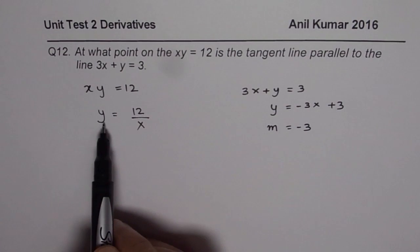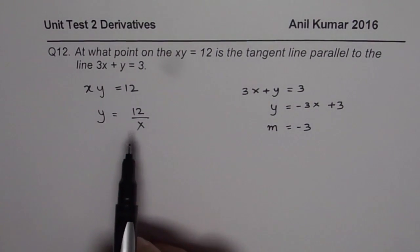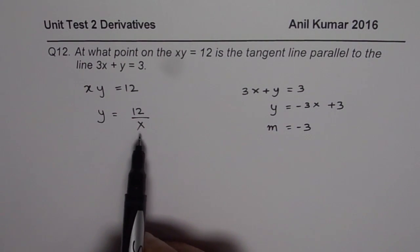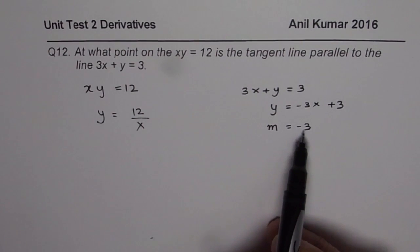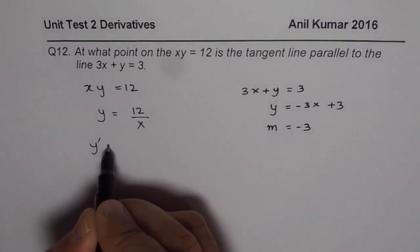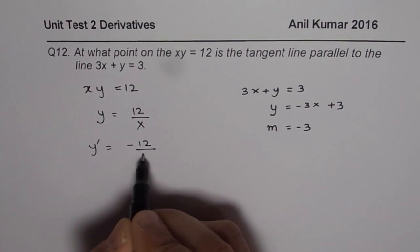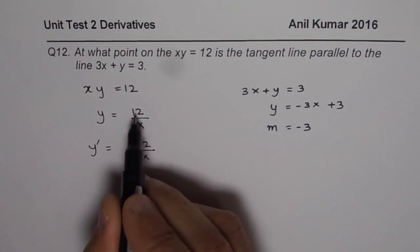Now when the function is y equals 12 over x, kind of a reciprocal function, we need to find a point on this function where the slope is minus 3. So that is the question. So what is y dash? y dash is minus 12 over x square. So that is the derivative of 12 over x.